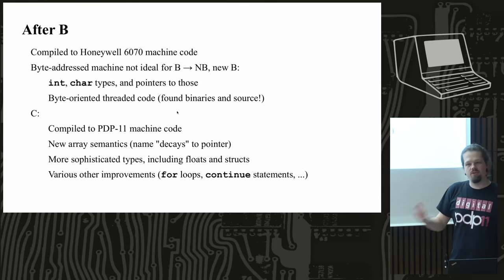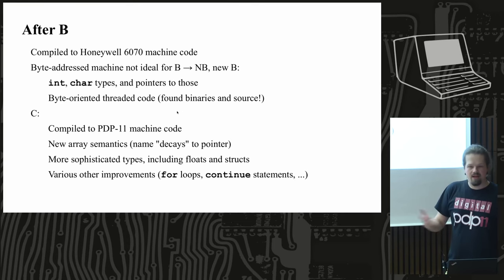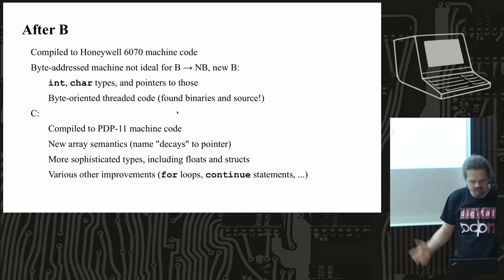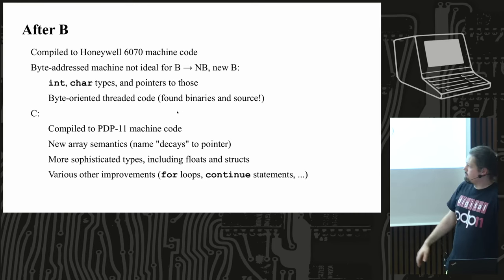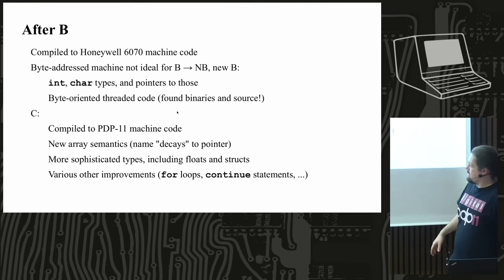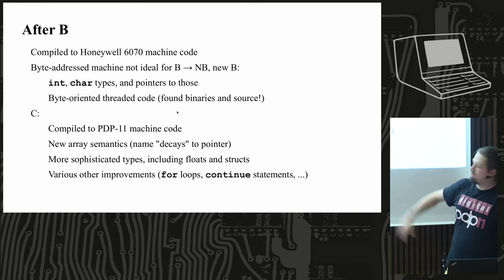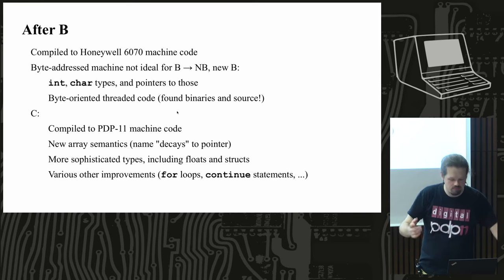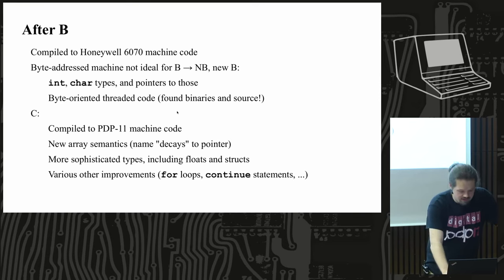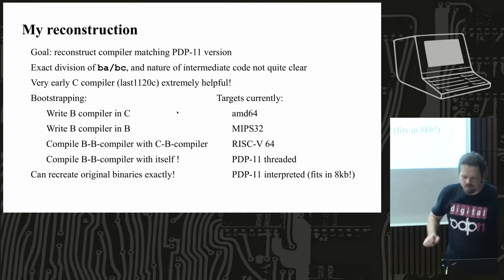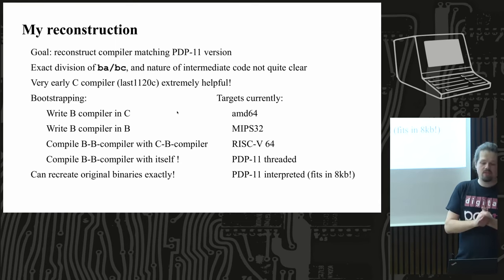One important change in C was a new semantics for how arrays work. In C, an array name 'decays' to a pointer to the first element — you can't assign to the name. In B you can assign to an array name, making it a real pointer with the pointer and the array separate. In C you just have the array. This was a very important change and necessary to make structs possible, since B has no structs and early C didn't either.